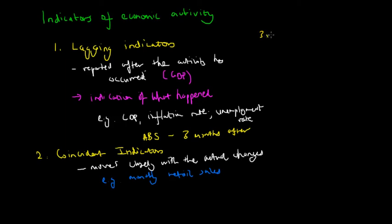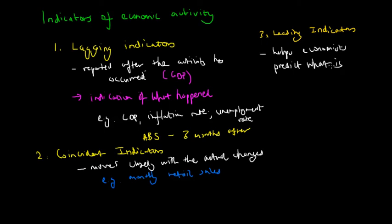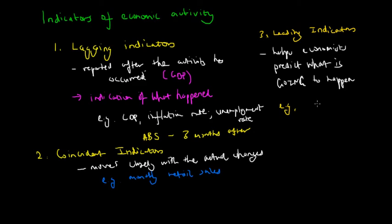The third type is leading indicators, which help economists predict what is going to happen in the economy. Because the government and the RBA are both forward-looking, they don't typically react to last month's GDP, inflation rate, or unemployment rate to determine policy. Instead, they look at leading indicators to determine their economic policies. These indicators include consumer confidence and business conditions.